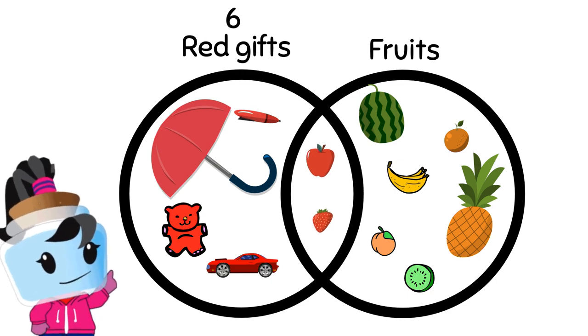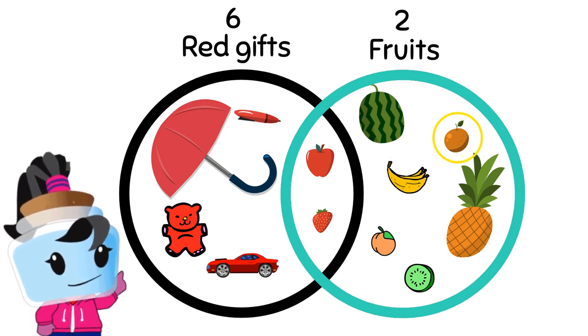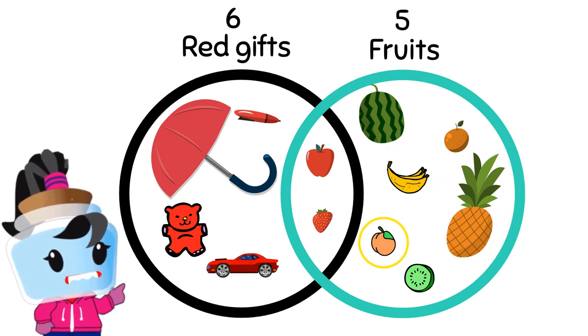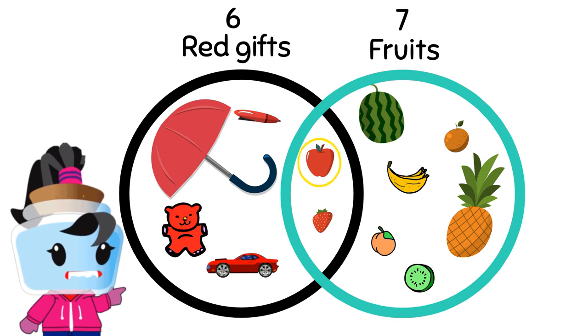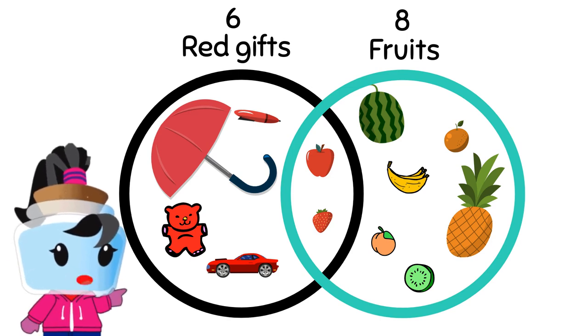Next, let's count the fruits. One, two, three, four, five, six, seven, eight. His mom bought eight fruits.